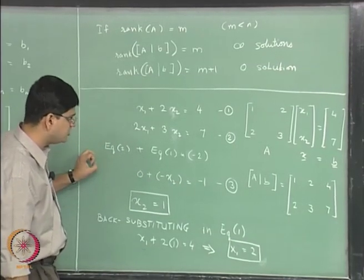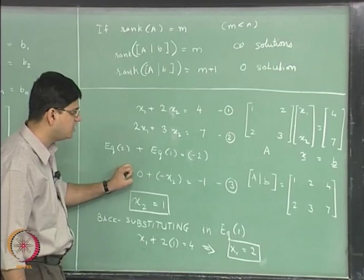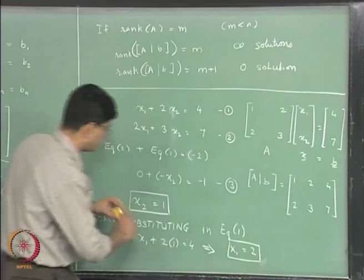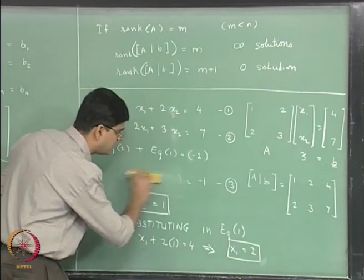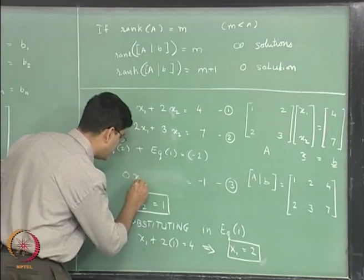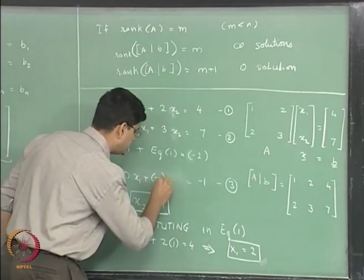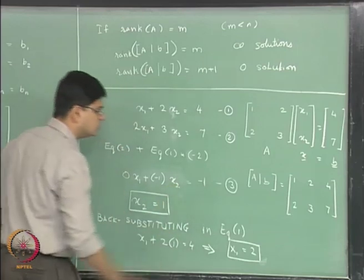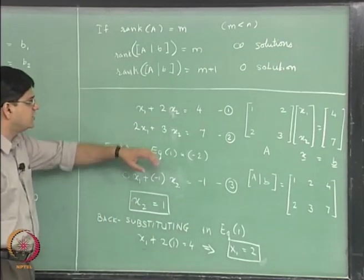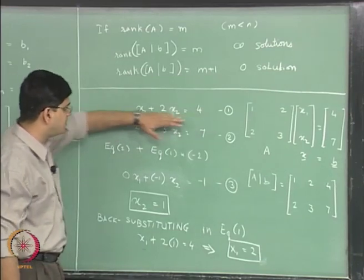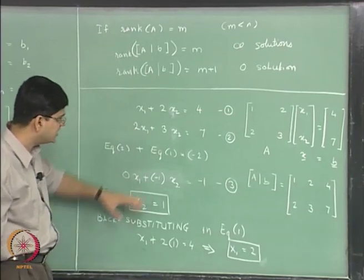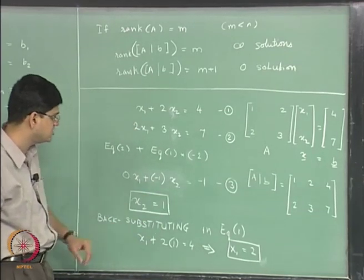In a matrix notation, it is going to be 0 multiplied by x1 plus minus 1 multiplied by x2 equal to minus 1. So I will erase this equation and write it in a different way: it is 0 multiplied by x1 plus minus 1 multiplied by x2.